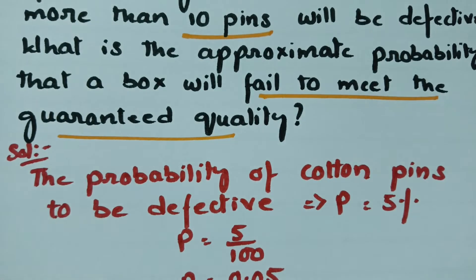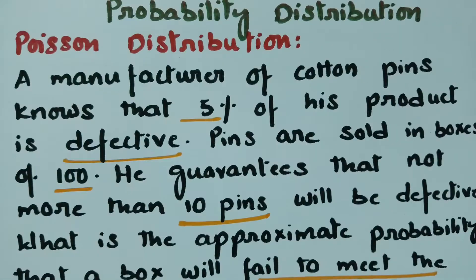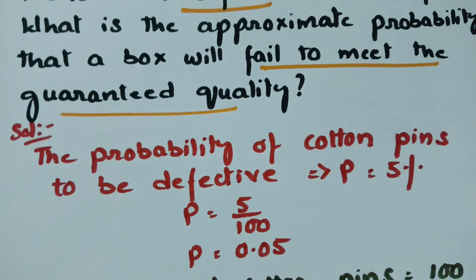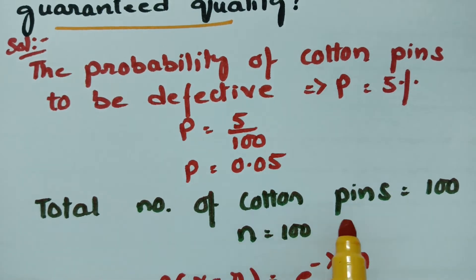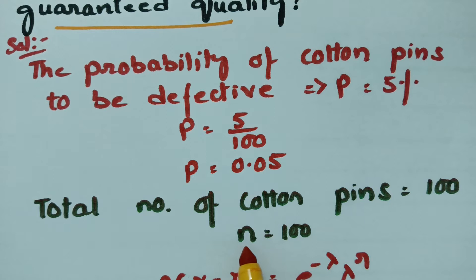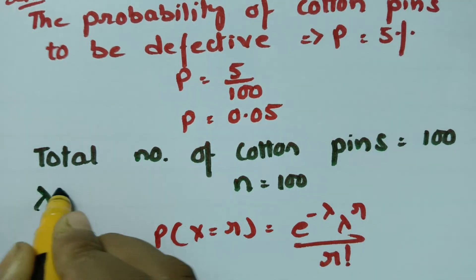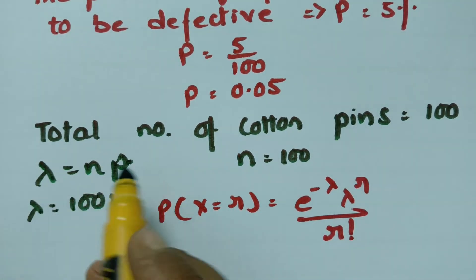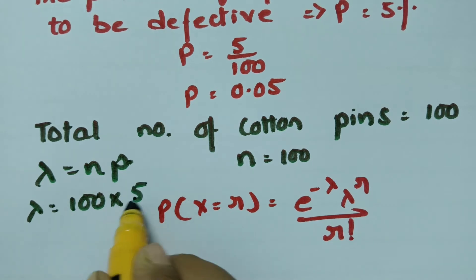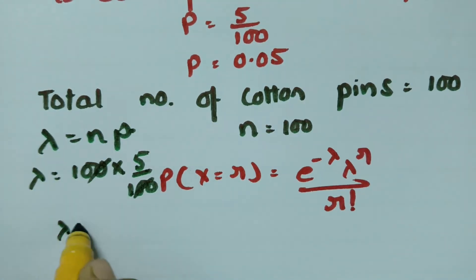The probability of a cotton pin being defective is 5%, so P = 5/100 = 0.05, and the total number of cotton pins is N = 100. Now, what is the value of lambda? Lambda is nothing but N into P. Here N = 100 and P = 5/100, so cancelling, the value of lambda is equal to 5.